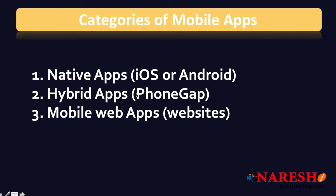Hybrid apps basically run on a WebView. Each platform has a WebView, and we load scripting language content into it. PhoneGap is a framework that provides all available libraries and classes to access native application features. Hybrid apps use scripting languages — similar to how websites load HTML content — and the same scripting language can be used across iOS, Android, and BlackBerry. However, hybrid apps cannot deliver native look or native performance.